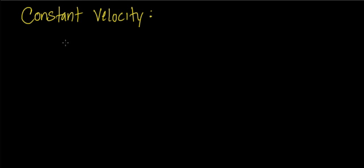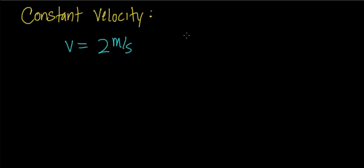In this session, what I'd like to do is an example of an object that moves with a constant velocity. Let's choose a velocity that's nice and simple — 2 meters per second. So this object will be moving with a constant velocity of 2 meters per second. What I'd like to do is develop the graphs: the distance versus time graph, the velocity versus time graph, and the acceleration versus time graph for this object.